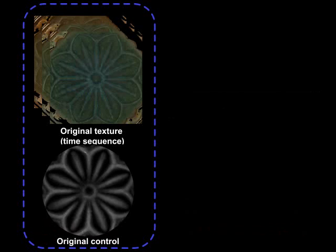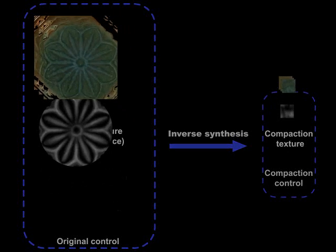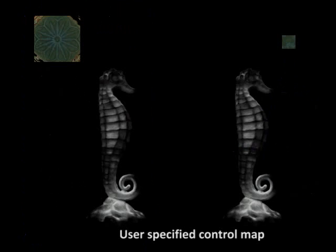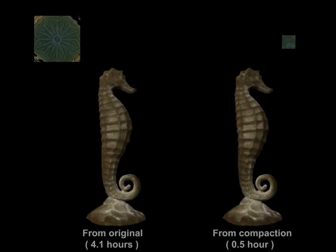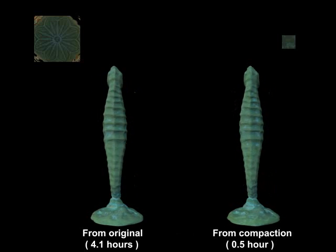Given a large, globally varying input texture with an auxiliary control map, our technique computes a small texture compaction that best summarizes the original, including both texture and control. This compaction can be used to reconstruct the original texture from its control map, or to resynthesize novel textures from user-supplied control maps. Due to the reduction in size, synthesis from our compaction is much faster than from the original.